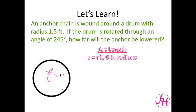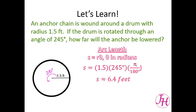Our arc length is s = rθ where θ is in radians. We plug in our radius of one and a half feet. Our angle measure was 245 degrees, and to convert that to radians we multiply by π over 180. So our arc length is approximately 6.4 feet. When we turn this drum 245 degrees, the anchor will be lowered approximately 6.4 feet.